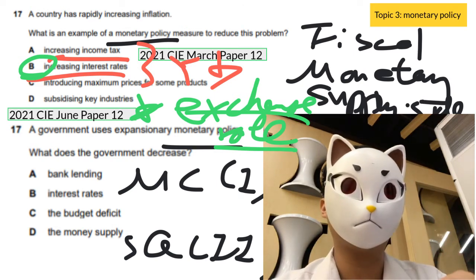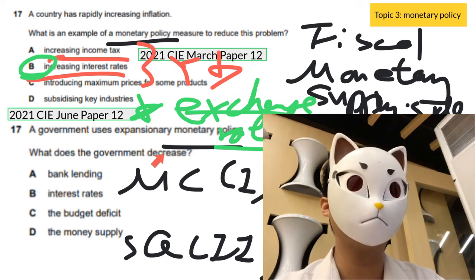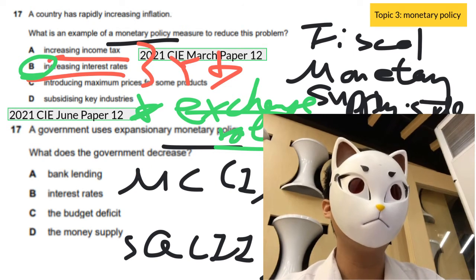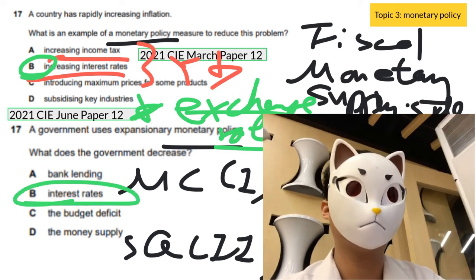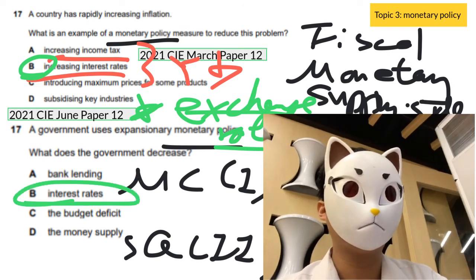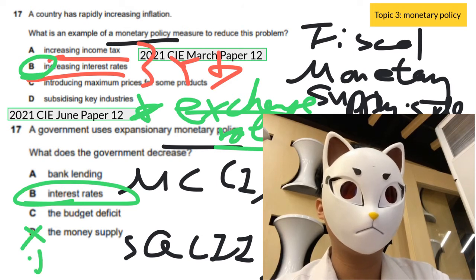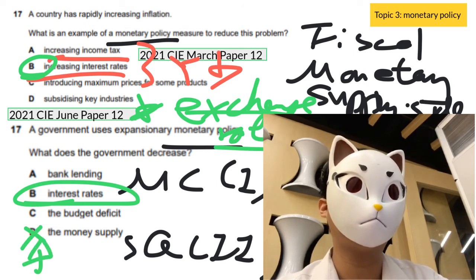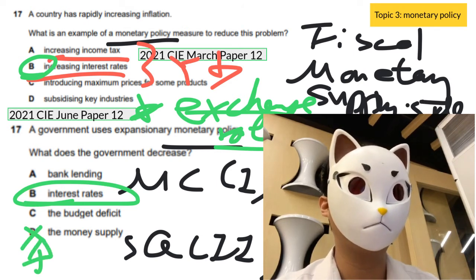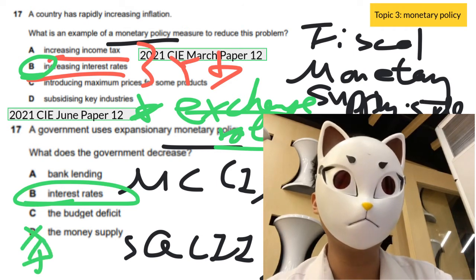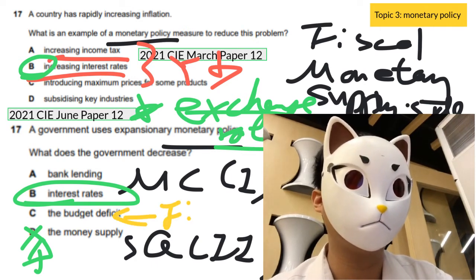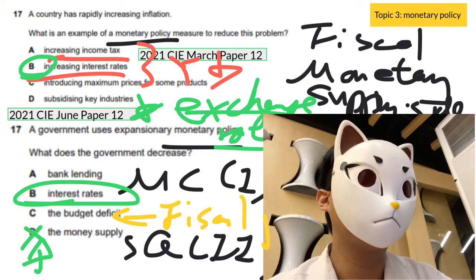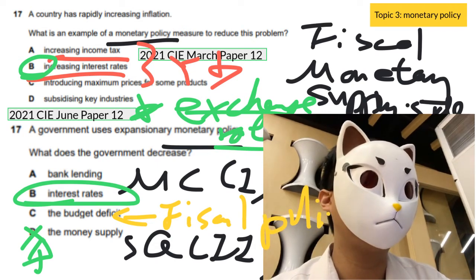For the expansionary monetary policy question: it involves a decrease in the interest rate or an increase in the money supply. The budget deficit option is wrong because that refers to fiscal policy, not monetary policy.